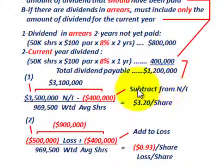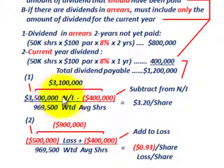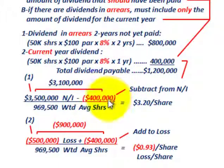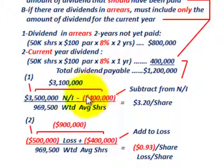Case 1: $3.5 million net income minus the current year preferred stock dividend of $400,000 gives income available to common shareholders of $3,100,000. Divide by the weighted average shares of 969,500, and we get $3.20 per share. Whether or not dividends were declared, or if there are dividends in arrears, always use only the current year preferred stock dividend.